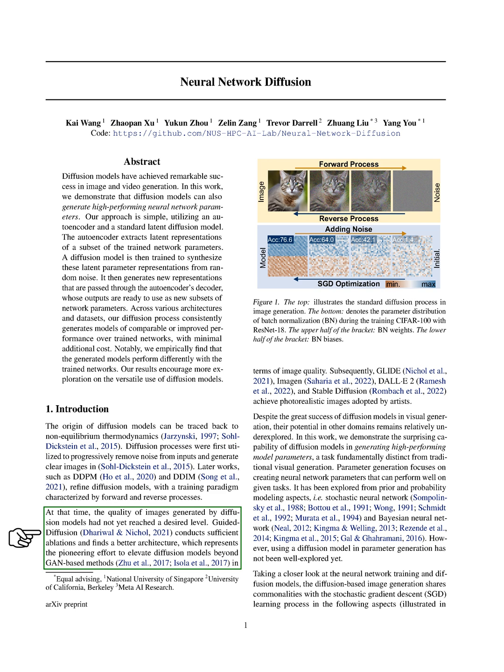This task, known as parameter generation, involves creating neural network parameters that excel in specific tasks. It has been previously approached through stochastic neural networks and Bayesian neural networks, but the use of diffusion models for this purpose remains largely uncharted territory.